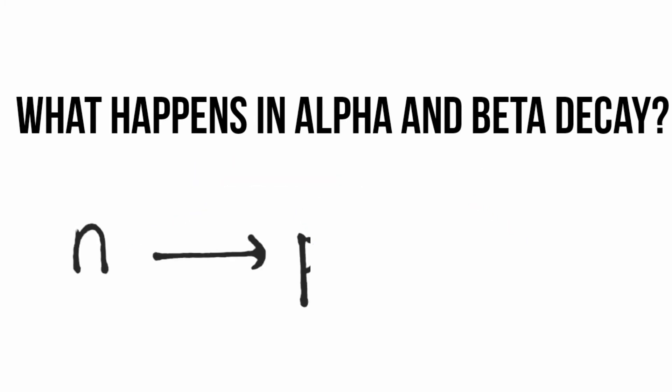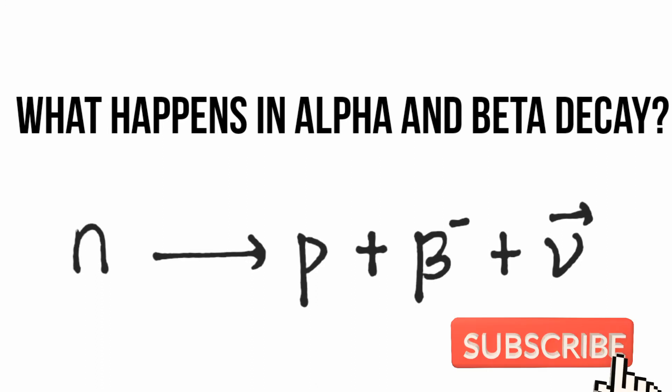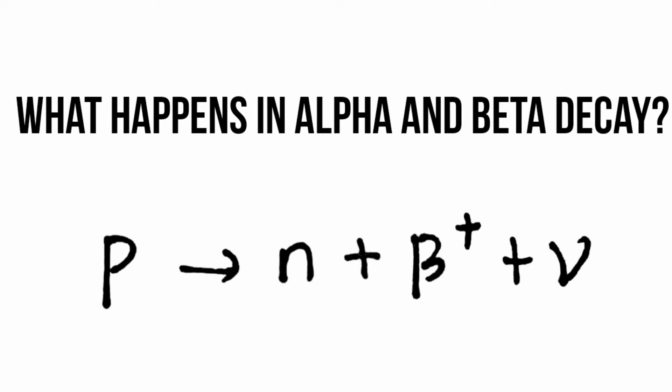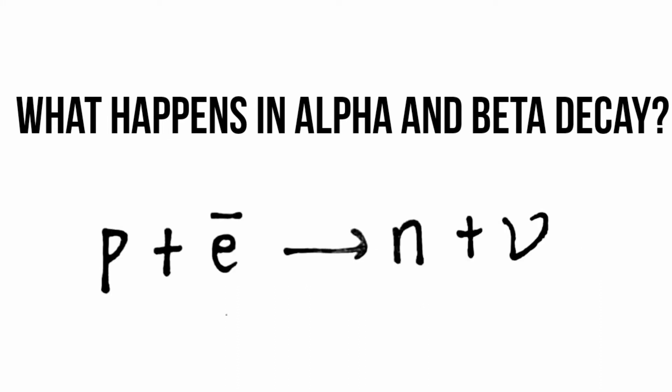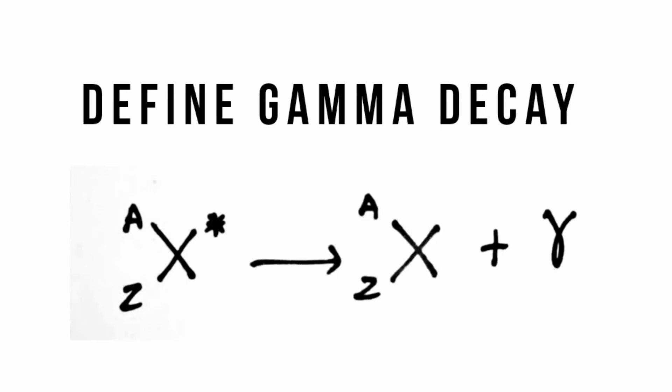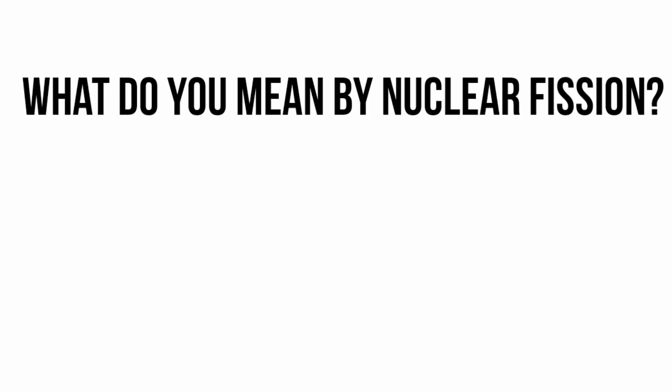This is the representation of beta negative decay, this is the representation of beta positive decay, and this is the representation of the K-capture process. Define gamma decay: in this process, an excited nucleus comes to ground state by emission of a gamma photon. This is how gamma decay can be represented.